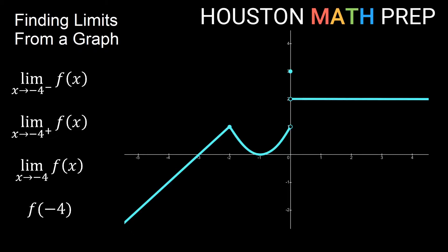We have a graph of a couple functions with some interesting things going on. For my first example, it asks what's the limit as x approaches negative 4 from the left side, from the negative side. You'll notice if we focus on x equals negative 4, that's a smooth, well-behaved part of the function. Approaching from the left side, I'm heading toward a y value of negative 1. So this first limit is negative 1.